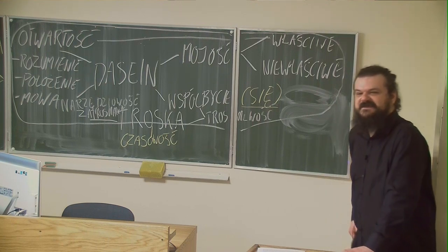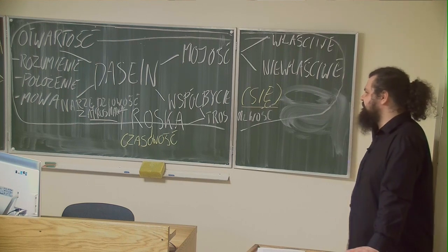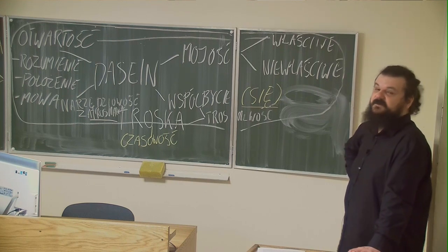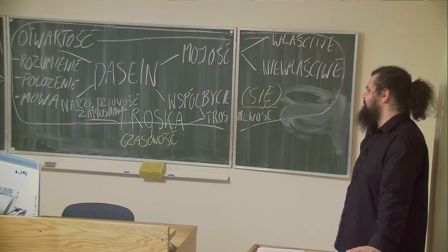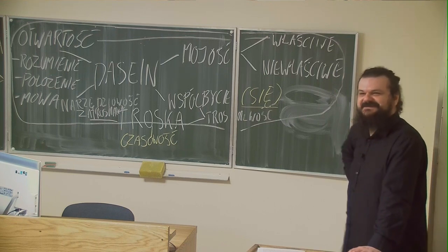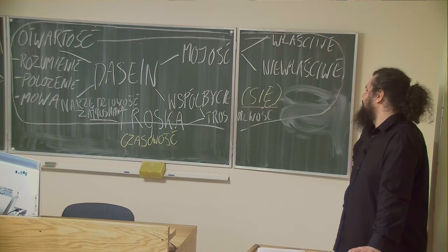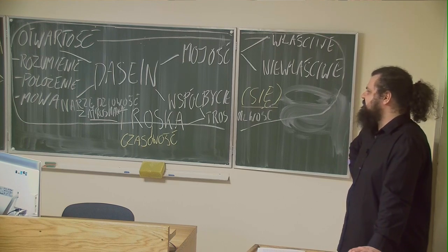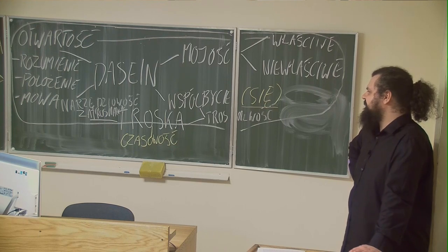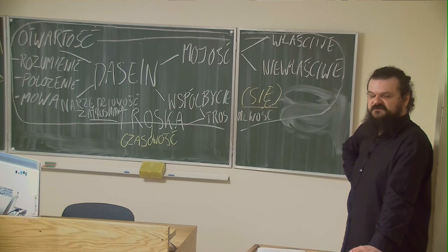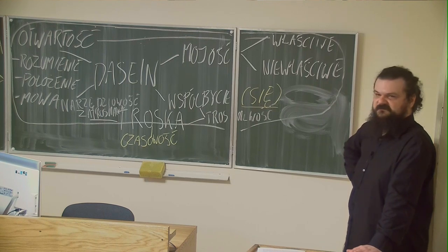Our way of relating to our being as the They can undergo change here. It can change insofar as the They, I repeat, stepped between us and our possibilities of being. And in that case, if these possibilities of being could be restored to us, we could reverse this process of separating us from ourselves and pass from inauthenticity into authenticity. Then the They will not disappear, but will be in some way distanced, modified. How does this happen?